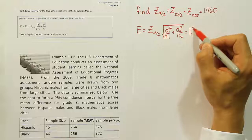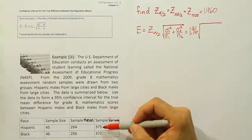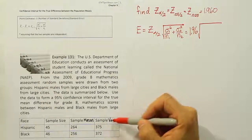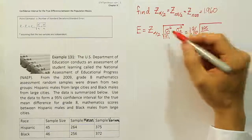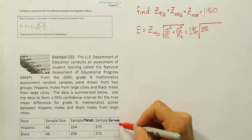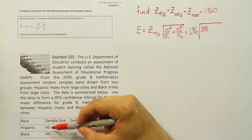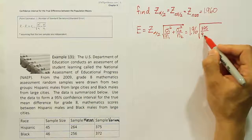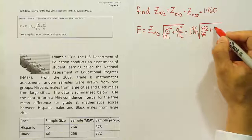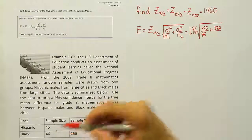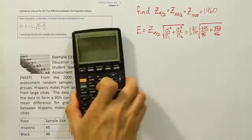And then when we plug those numbers in for this particular example, z alpha divided by 2 is 1.96 times the square root of... We don't need to square the standard deviation to get to the variance since we're already given the variance. And then we divide by the sample size. If Hispanic males are going to be our first group, then we're going to put 45 there for the denominator, plus the variance for the second group, that would be the black males in the study. That's 372 divided by the sample size of 46.